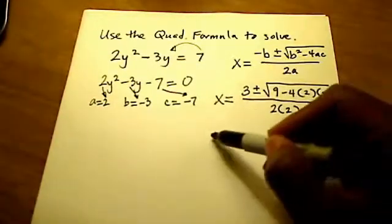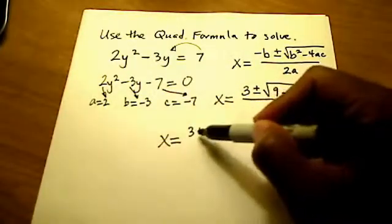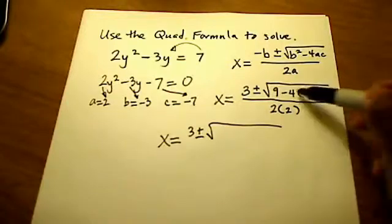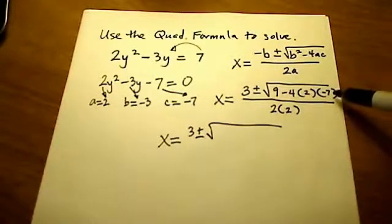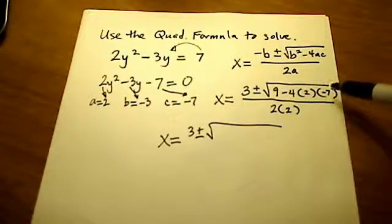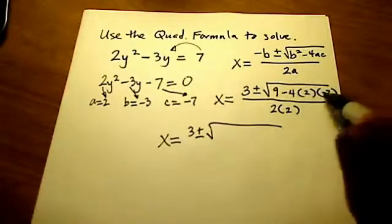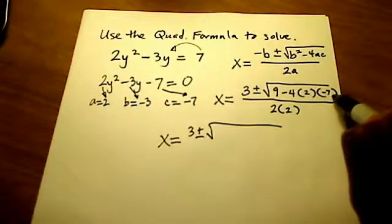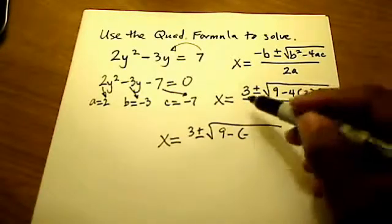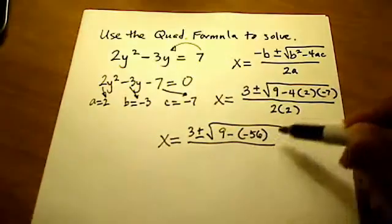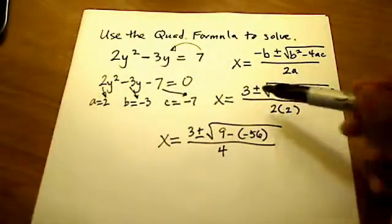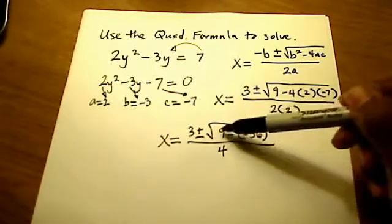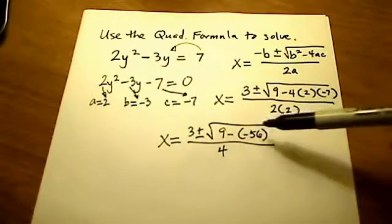What I would work out first in this formula is the inside of that radical sign — that big square root — because if all of this turns into a negative number we can automatically stop, since a negative number inside a square root is not real; that kicks into imaginary numbers, which we're not doing in Mat 099. So, doing the multiplication first: 4 times 2 is 8, and 8 times negative 7 is negative 56. This gives us 9 minus negative 56, which is the same as 9 plus 56, and 9 plus 56 is 65.